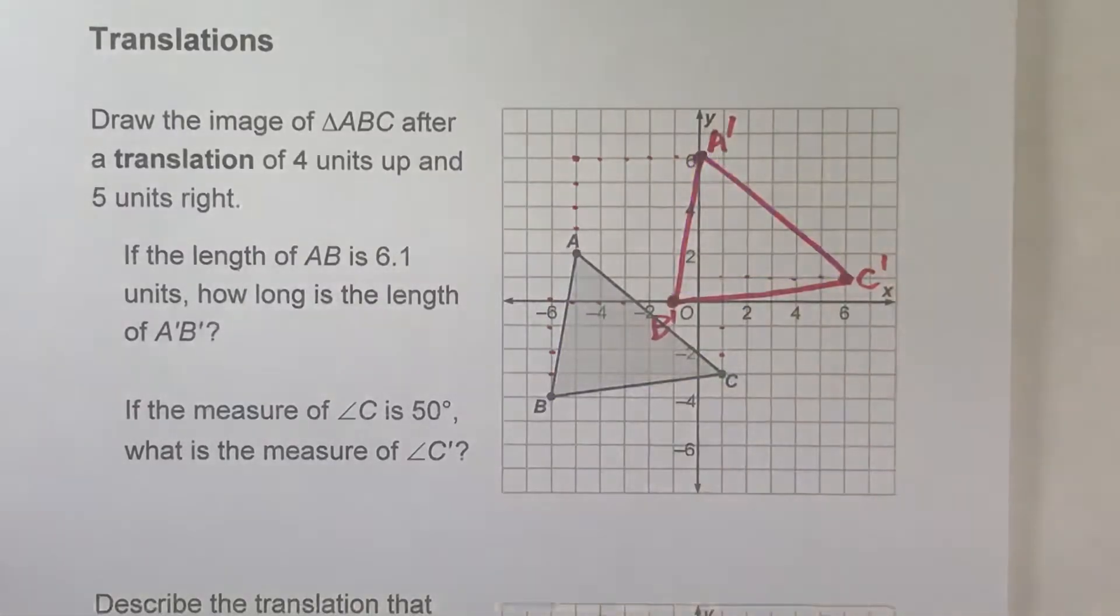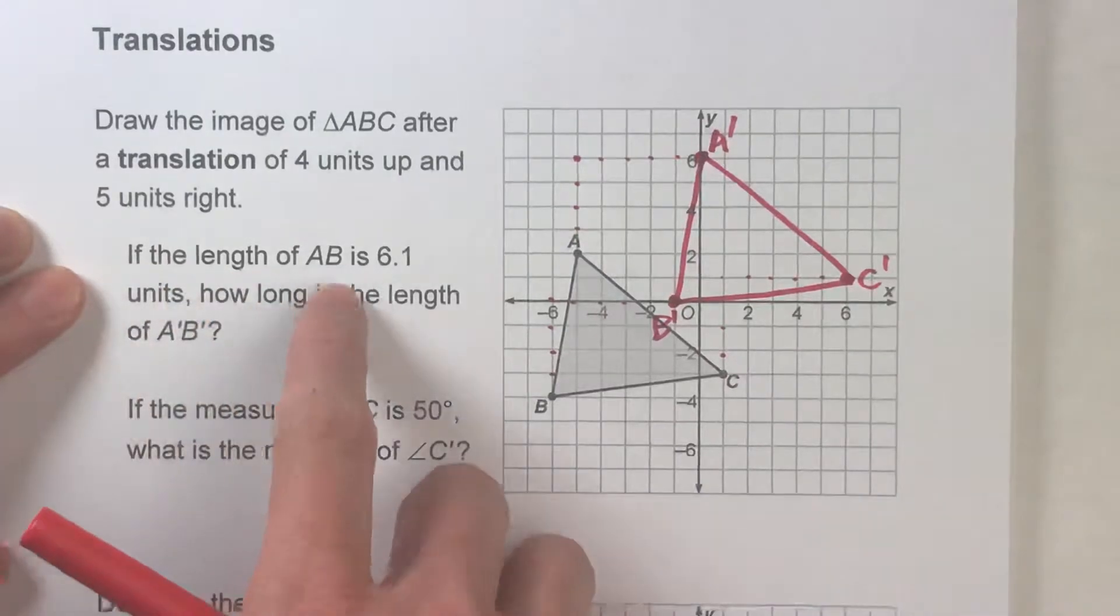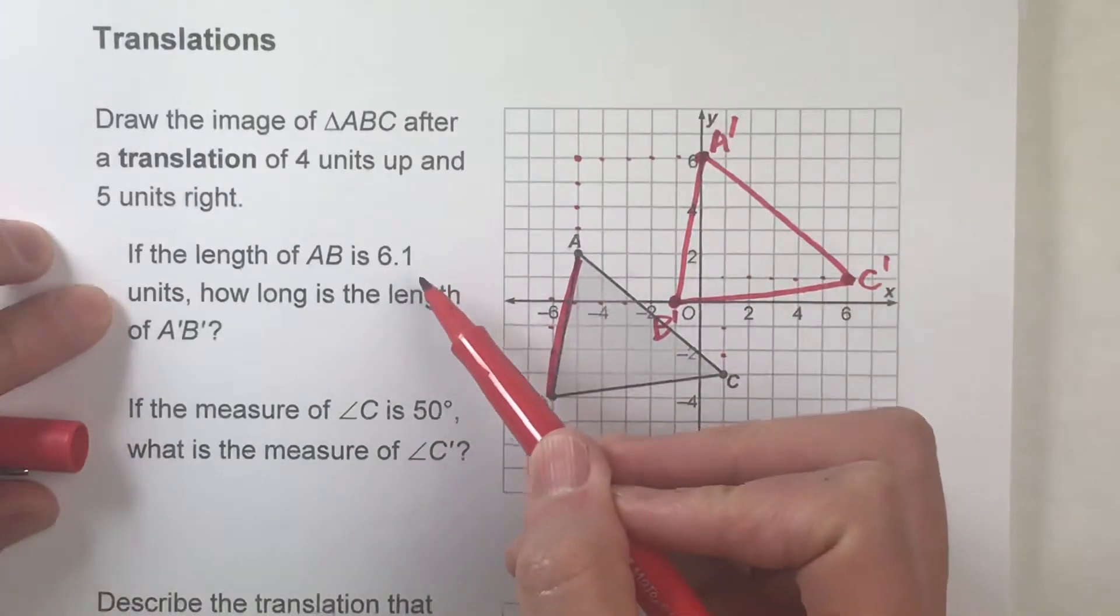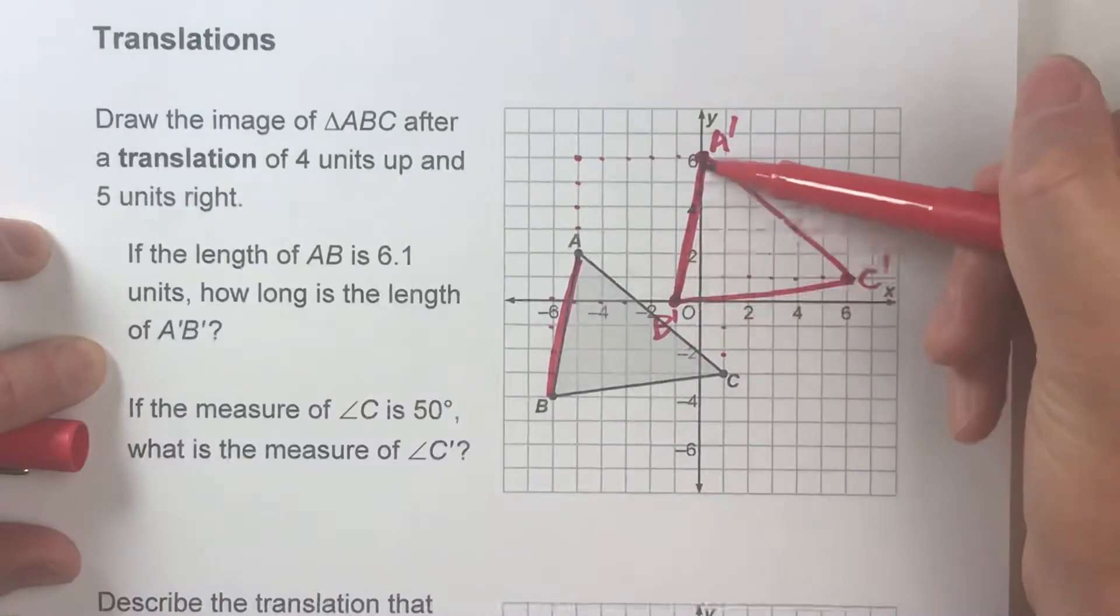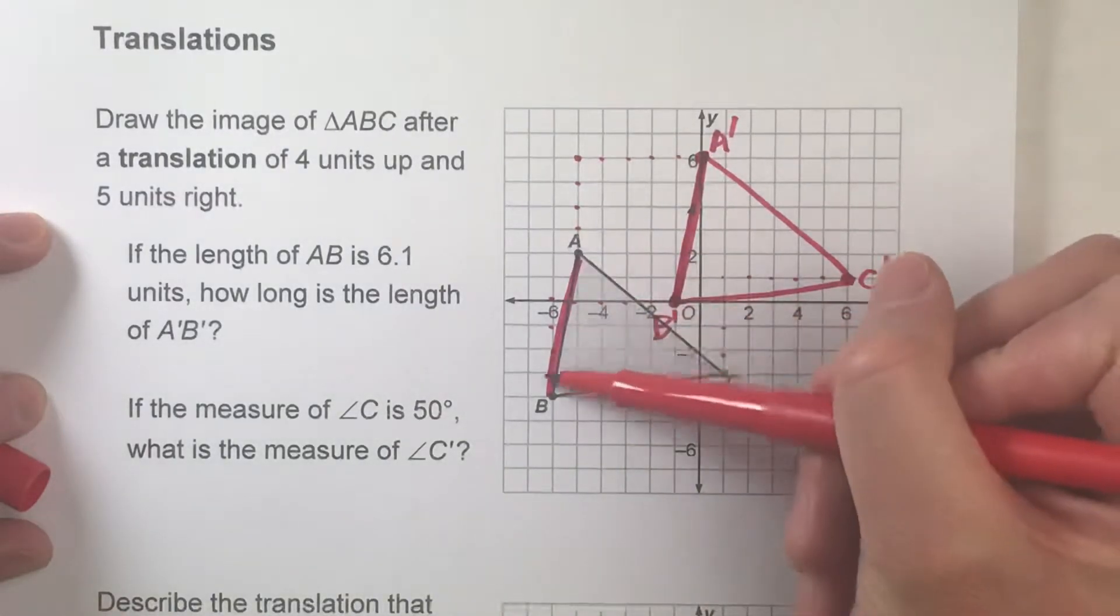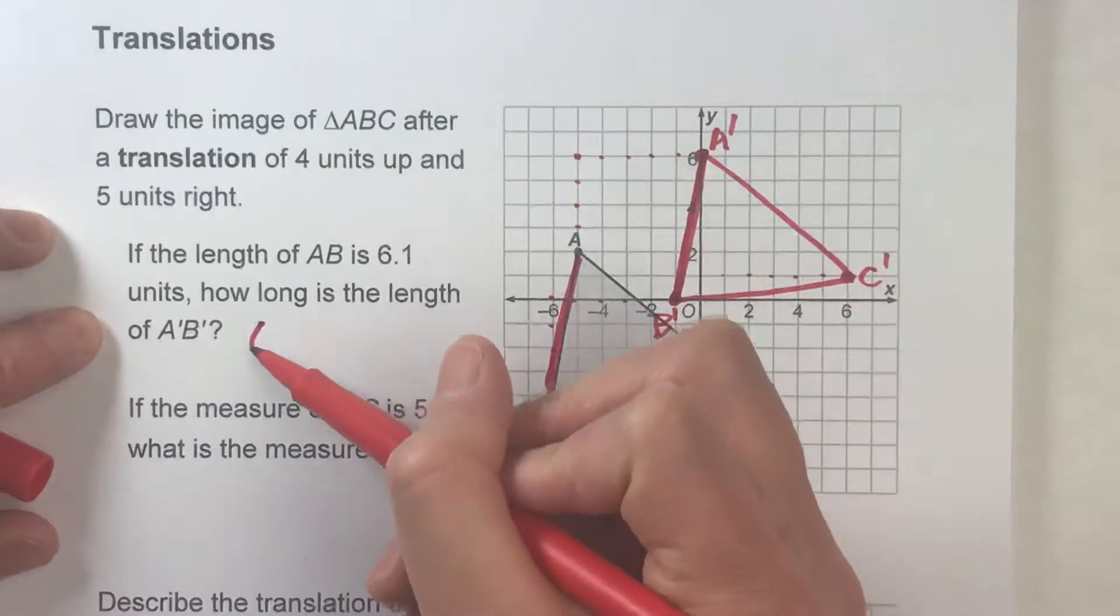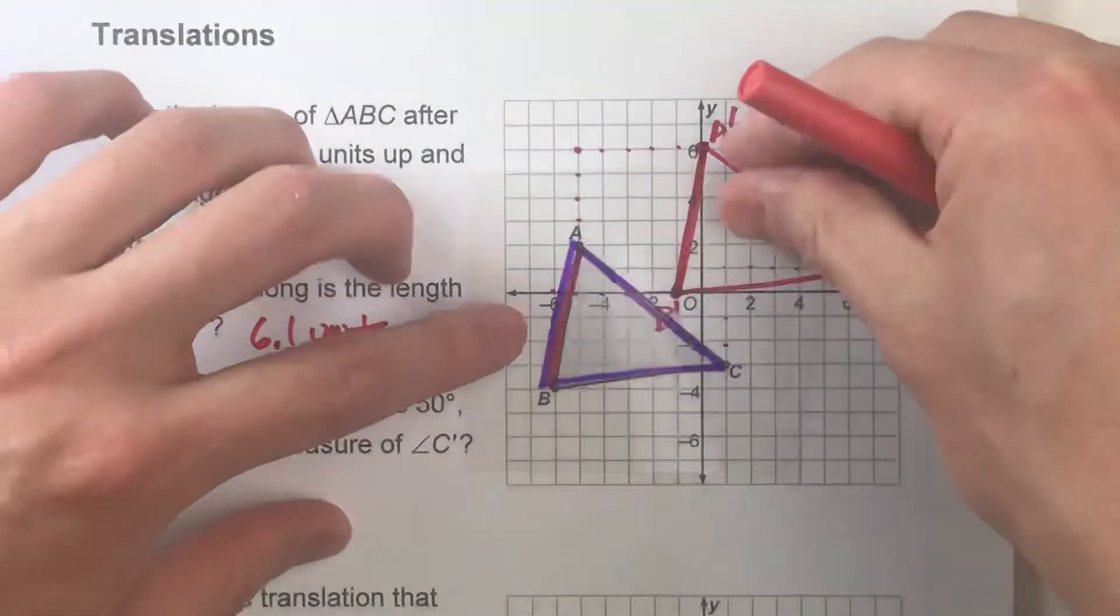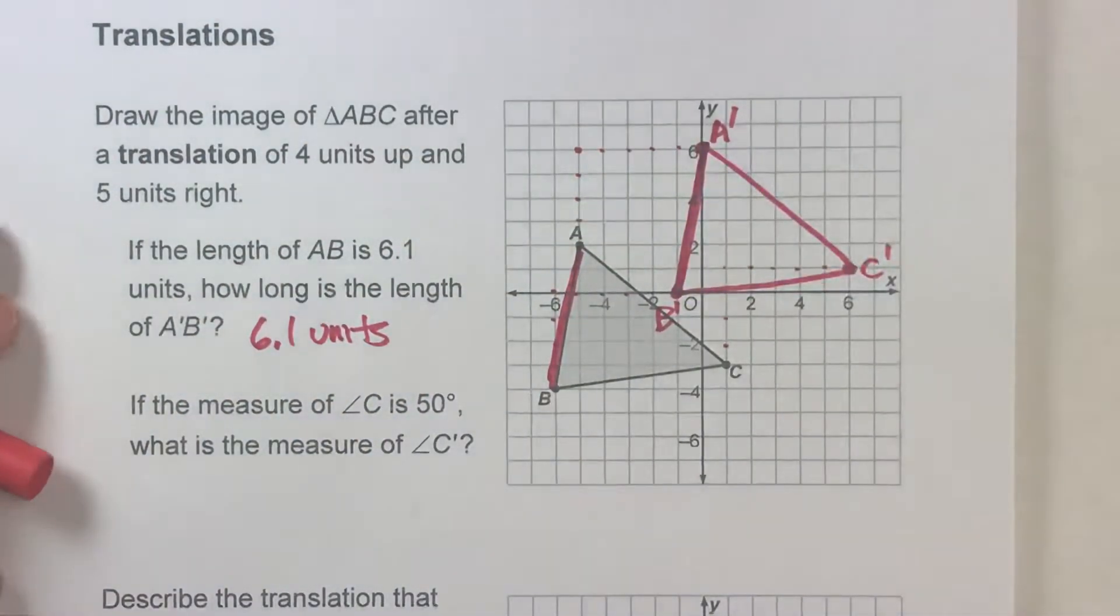So when it asks these next questions, we can keep that in mind. If the length of AB, so this segment right here, this segment is 6.1 units long, how long is the length of segment A prime B prime? That's this segment right here. Well, since we know these are congruent triangles, if this length here is 6.1, this one here also has to be 6.1 because they're the same length. Remember, this side right here is the exact same length as this side over here of this triangle.